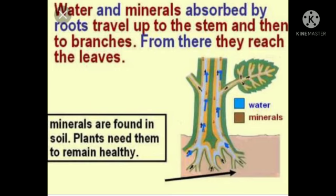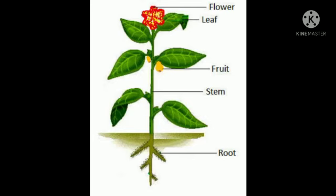The next part is the stem. Some plants have soft and tender stems, and some have thick and hard stems. The thick and hard stem of big plants is called a trunk, but the function of the stem is the same in all plants. The main functions of the stem are support, conduction, and growth.